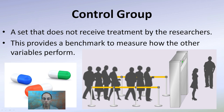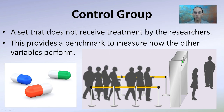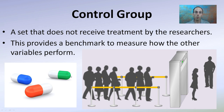Good experiments include a control group — a set that does not receive a treatment from the researchers. In the plant example, the control group would be the set of plants that receives no fertilizer. The goal is to provide a benchmark to measure how other variables perform. In drug studies, you may see a placebo or sugar pill serving the same purpose.